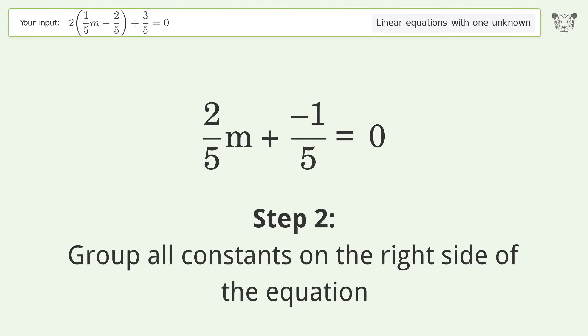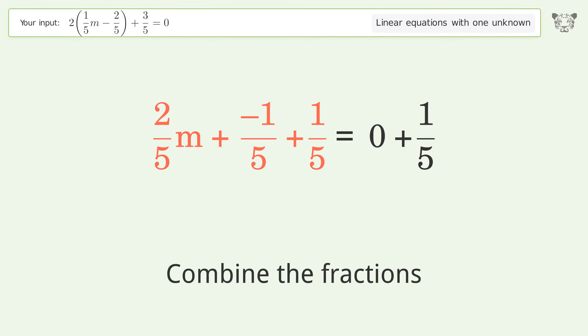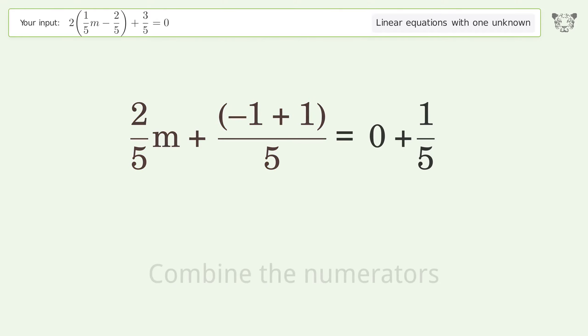Group all constants on the right side of the equation. Add 1 over 5 to both sides. Combine the fractions. Combine the numerators.